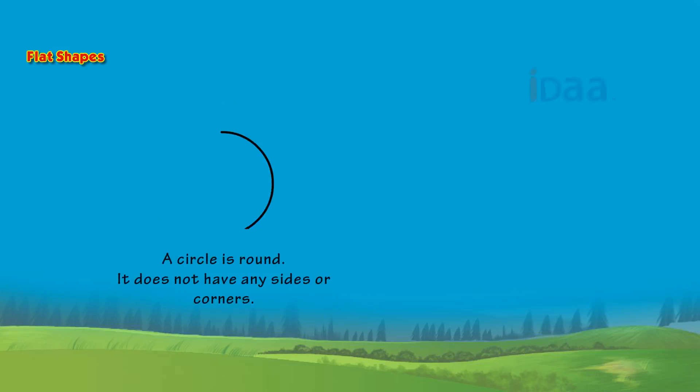Circle. A circle is round and it does not have any sides or corners. For example, a coin.